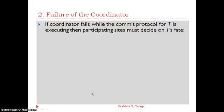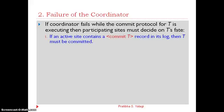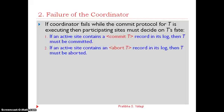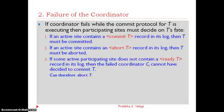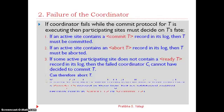The second type of failure is failure of the coordinator. If the coordinator fails while the commit protocol for a transaction T is executing, the participating sites must decide the fate of T. There are several cases: if an active site's log contains 'commit T', the transaction must be committed. If an active site's log contains 'abort T', the transaction is aborted. If an active site does not contain a ready record, it records its log and takes a decision accordingly.